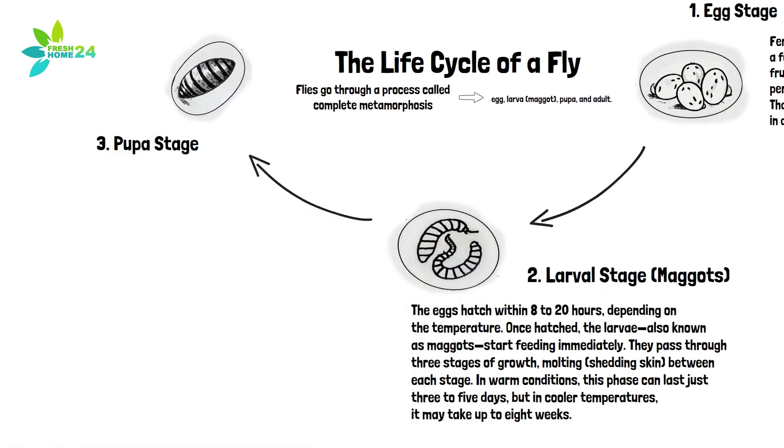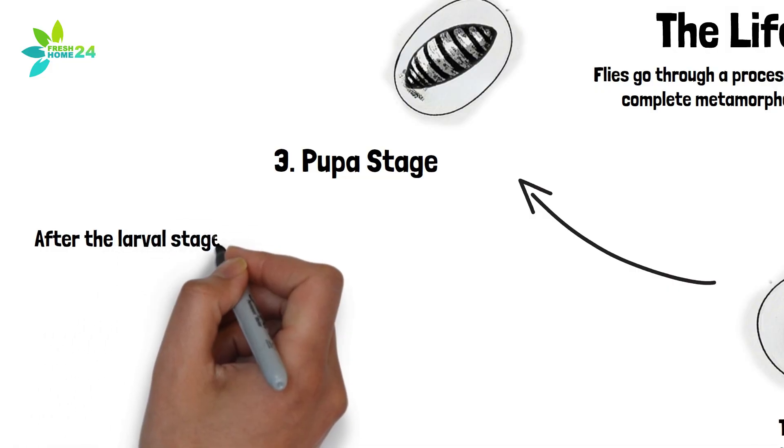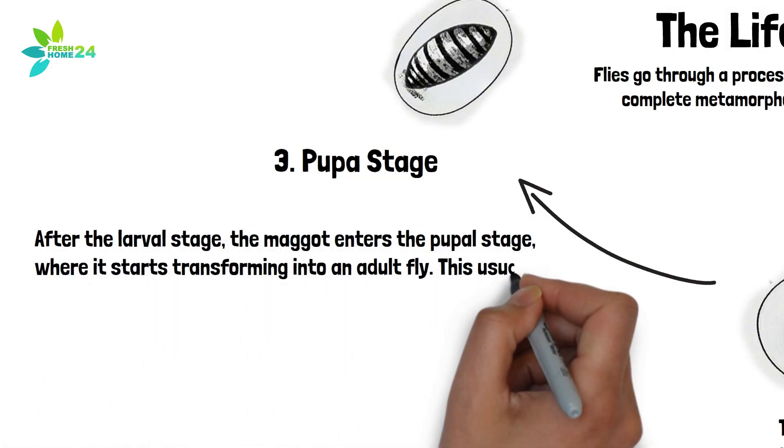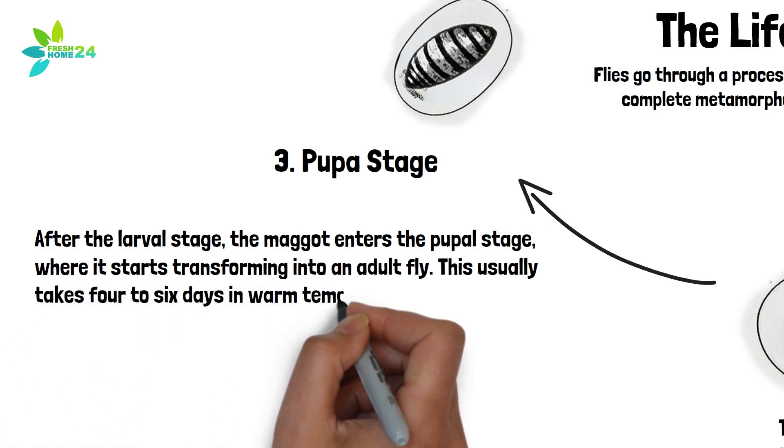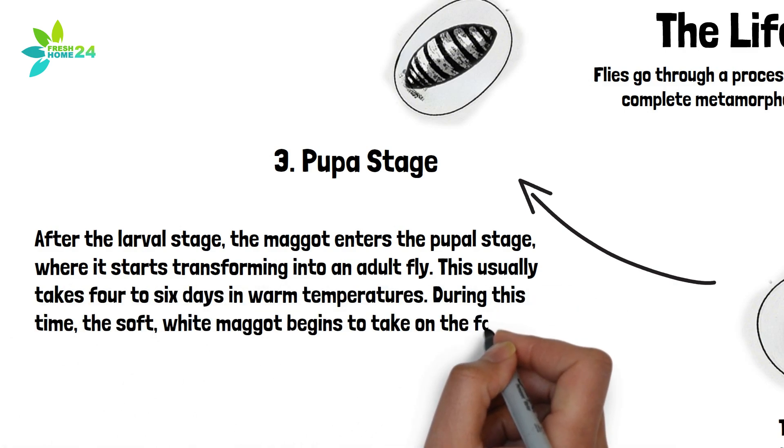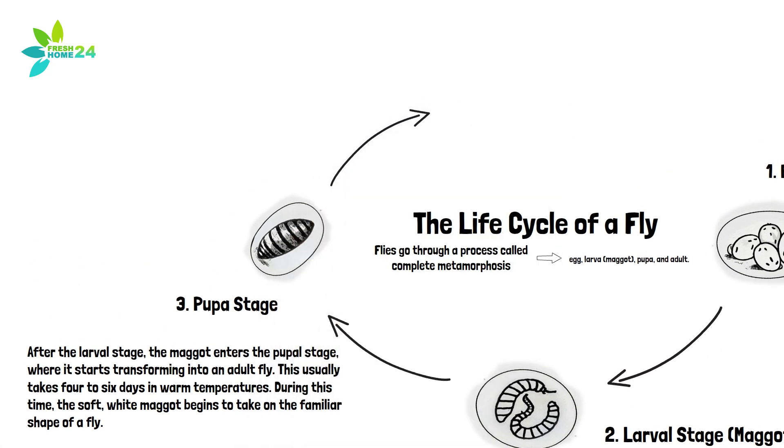3. Pupal Stage. After the larval stage, the maggot enters the pupal stage, where it starts transforming into an adult fly. This usually takes 4 to 6 days in warm temperatures. During this time, the soft, white maggot begins to take on the familiar shape of a fly.